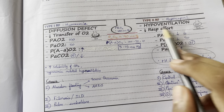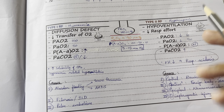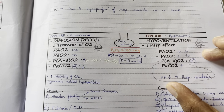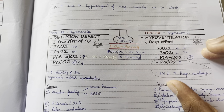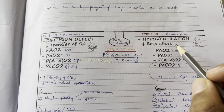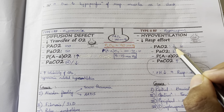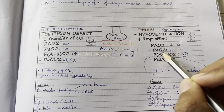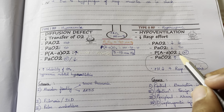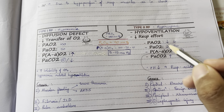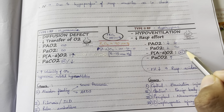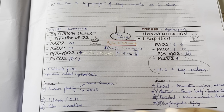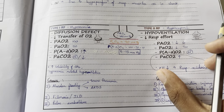In type 2, there is hypoventilation causing CO2 buildup. Both alveolar and arterial PaO2 decrease equally, so there is no diffusion problem and the A-a gradient is normal. Only PaCO2 increases, causing respiratory acidosis in type 2 respiratory failure.